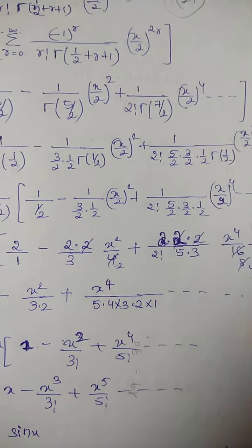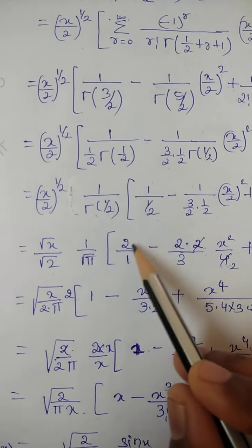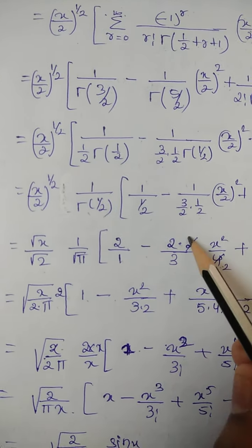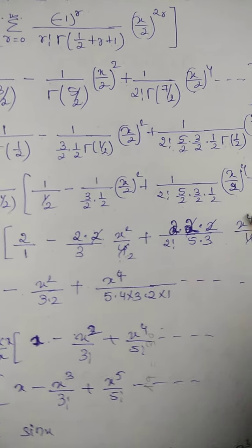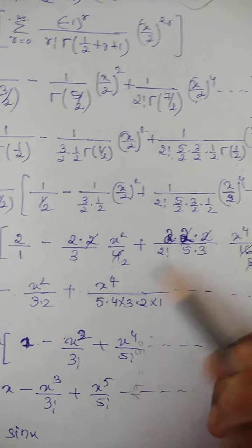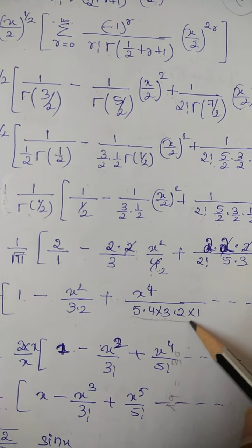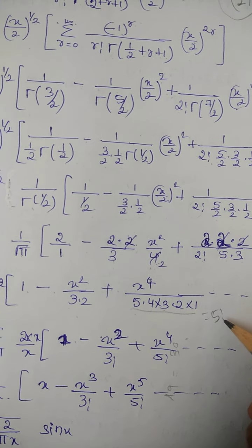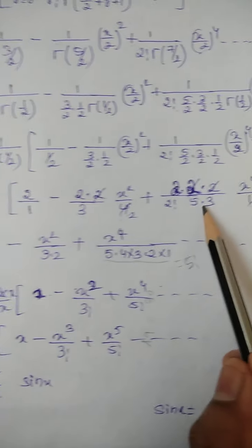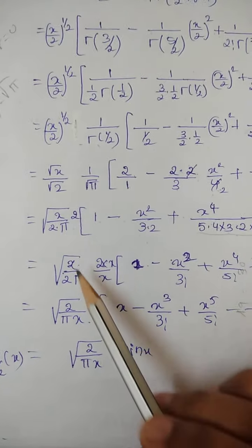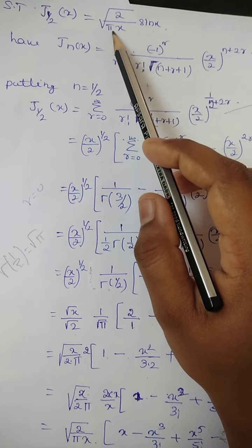After cancellations, we can take 2 out of the bracket as a common factor. The remaining terms are: 1 minus x²/(2·3) plus x⁴/(4·5·3·2!) and so on — recognizing this as a factorial pattern. Note that 5·4·3·2·1 = 5!, so we do not need to multiply all terms individually.